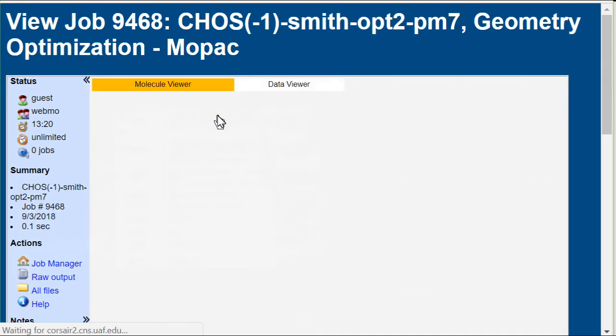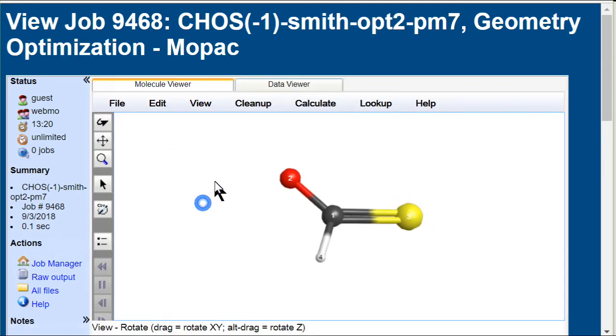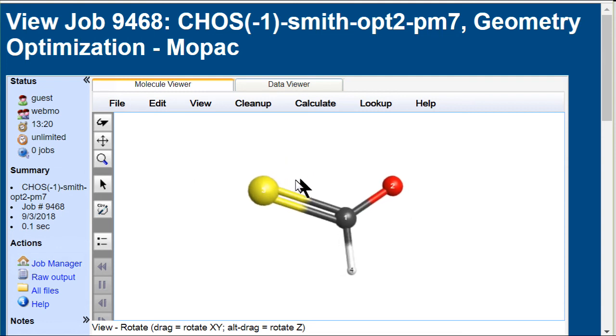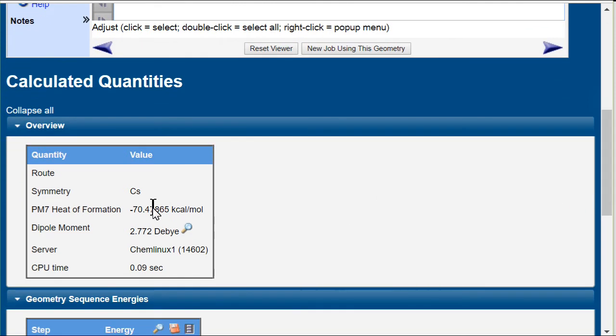Checking the completed job, we find a planar geometry with a sulfur-carbon-oxygen bond angle of 127.122 degrees, essentially identical to 127.121 degrees. Heat of formation minus 70.48 kcals per mole.